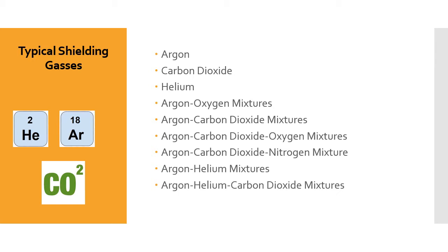Here are the typical shielding gases used for gas metal arc welding: argon, carbon dioxide, helium, and then various mixtures — argon-oxygen mixtures, argon-carbon dioxide-oxygen mixtures, and argon-helium mixtures. There's a whole science behind this. If you really get sucked into it, it's best to talk to a professional. The people that supply the gases have all kinds of literature on why specific gas mixtures are good for specific metals in certain positions. If you need more information, it's definitely out there — a couple of Google searches should get you more than you need.